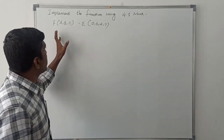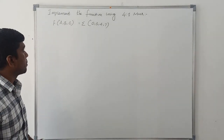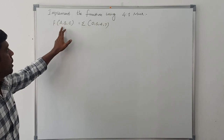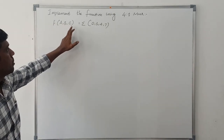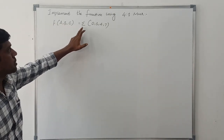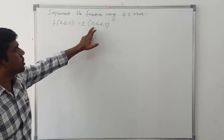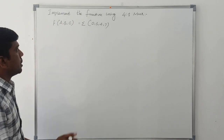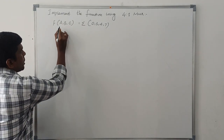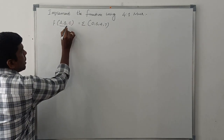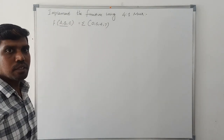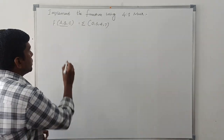Implement the function using a 4-to-1 MUX. F(A, B, C) = Σ(0, 3, 4, 7). It is a 3-variable function where A, B, C represent the input variables.